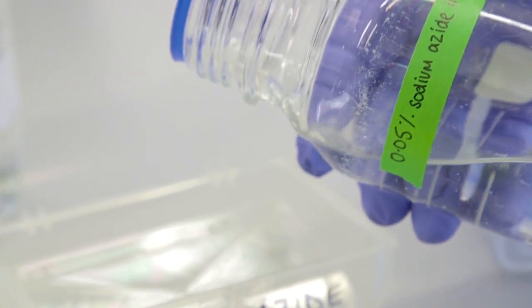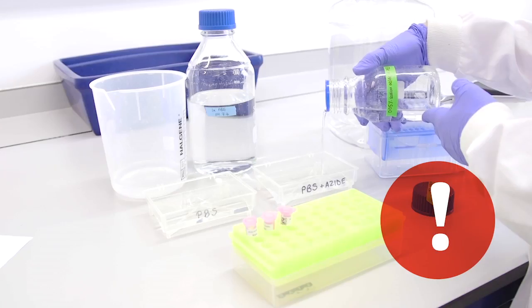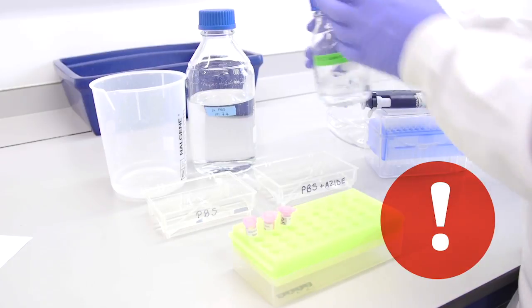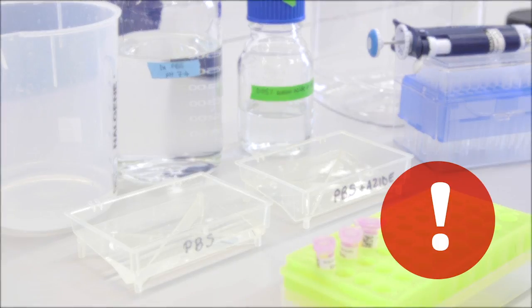Sodium azide is used as a preservative but can be hazardous and very toxic. For this procedure, it is used only at a 0.05% dilution in PBS at pH 7.4 in small volumes. When preparing this from a 10% stock bottle, it is advisable to use a fume cupboard.